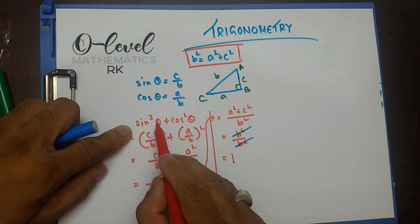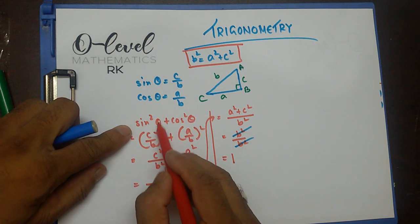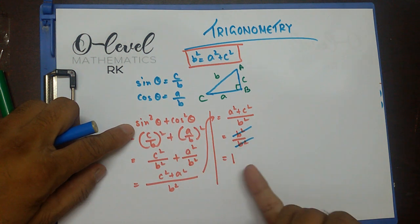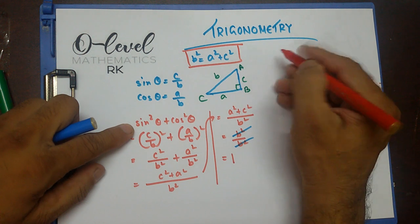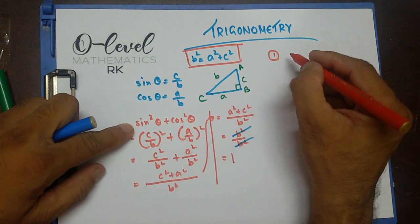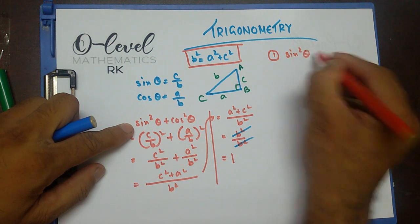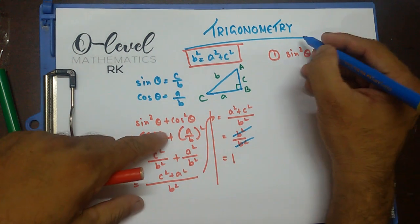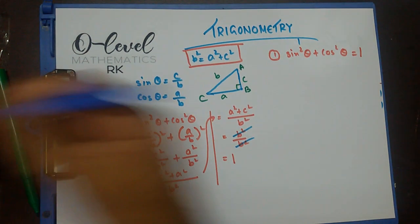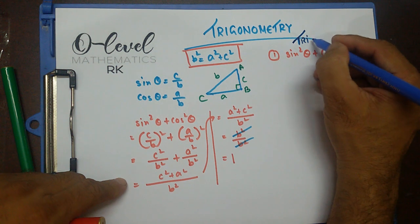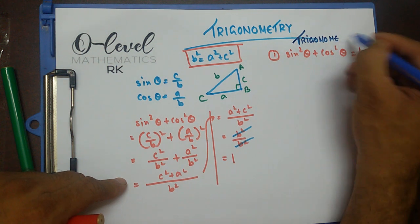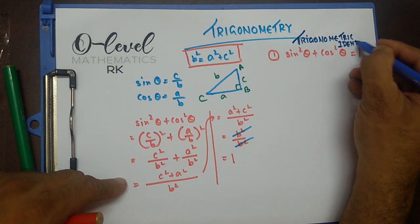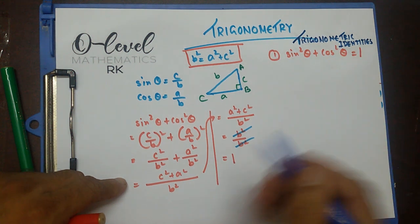I can cross them off, giving equal to 1. So regardless of the value of theta, whatever that theta's value is, if I take sin squared theta plus cos squared theta, it will come to 1. So formula number one from today's lecture: sin squared theta plus cos squared theta equals 1. This is known as a trigonometric identity.